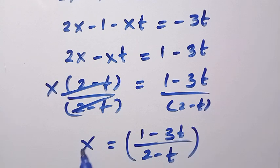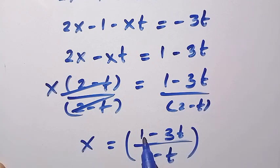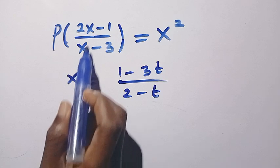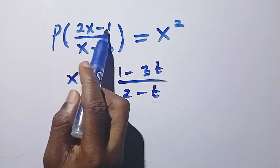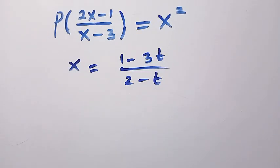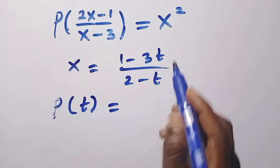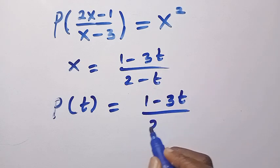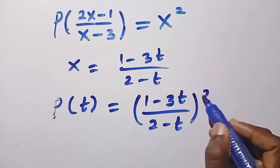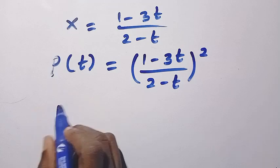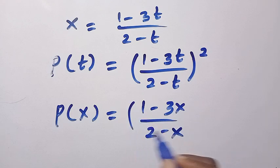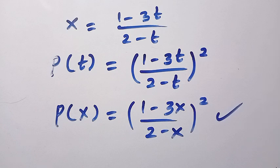Here is what we get for making x the subject of the formula. Now we come back to the given problem and replace every x with (1 minus 3t) divided by (2 minus t). Since we let (2x minus 1) over (x minus 3) equal t, we now have p of t equals (1 minus 3t) divided by (2 minus t), all raised to the power of 2. By switching t to x, we get p of x equals (1 minus 3x) divided by (2 minus x), all squared. This is the result for p of x.